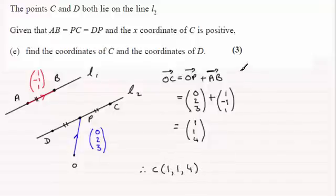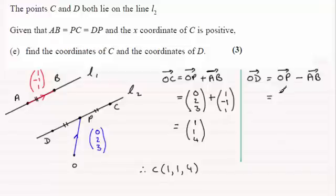Now to get D, it's really much the same kind of thing. To get from O to D is to go from O to P, but this time minus the vector A to B, to go in the opposite direction. So that's minus A to B. So we've got O to P, which is (0, 2, 3), as its position vector, minus A to B, which is going to be (1, minus 1, 1).